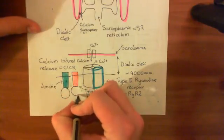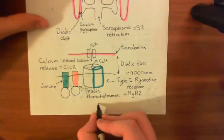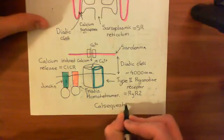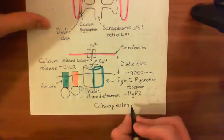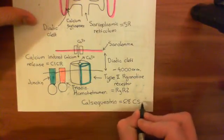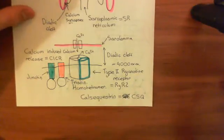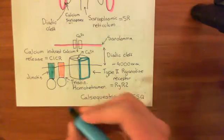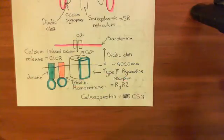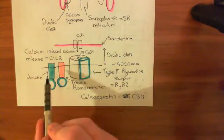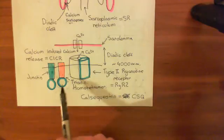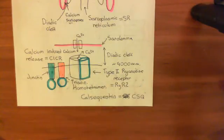Both junctin and triadin associate with another protein known as calsequestrin — often abbreviated to CSQ. Calsequestrin is the protein which binds to calcium. So the type 2 ryanodine receptor is associated with junctin and triadin, which are associated with calsequestrin, and calsequestrin is associated with calcium. There is lots of calcium very near this type 2 ryanodine receptor.